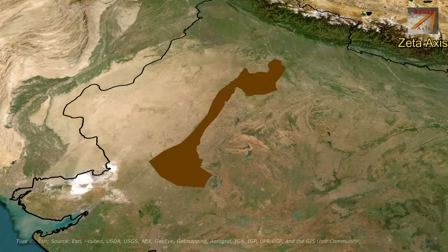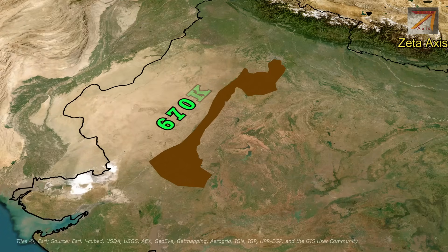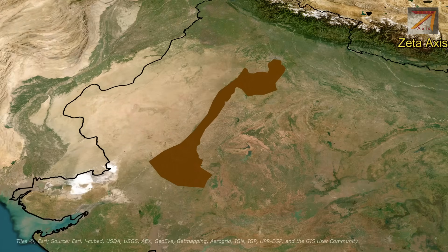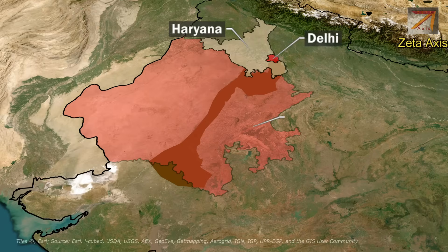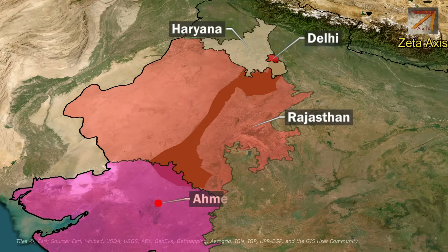The Aravalli mountain range is a mountain range in the northwestern part of India. The Aravalli range runs for 670 km in a southwest to northeast direction, starting near Delhi, passing through southern Haryana, Rajasthan, and then ending near Ahmedabad in Gujarat.